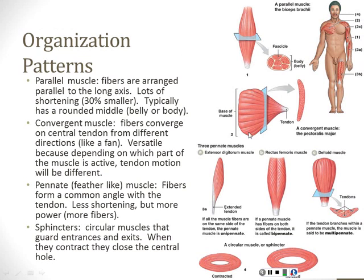Muscles have different organizational patterns. We have the convergent muscle, where there's a broad base that converges on one point — seen in the pectoralis and somewhat the gluteus maximus; convergent muscles can have a wide range of motions. Then the pennate muscles: bipennate has two sides like a feather, unipennate looks like half a feather. And then the sphincter — a circular muscle is a sphincter.